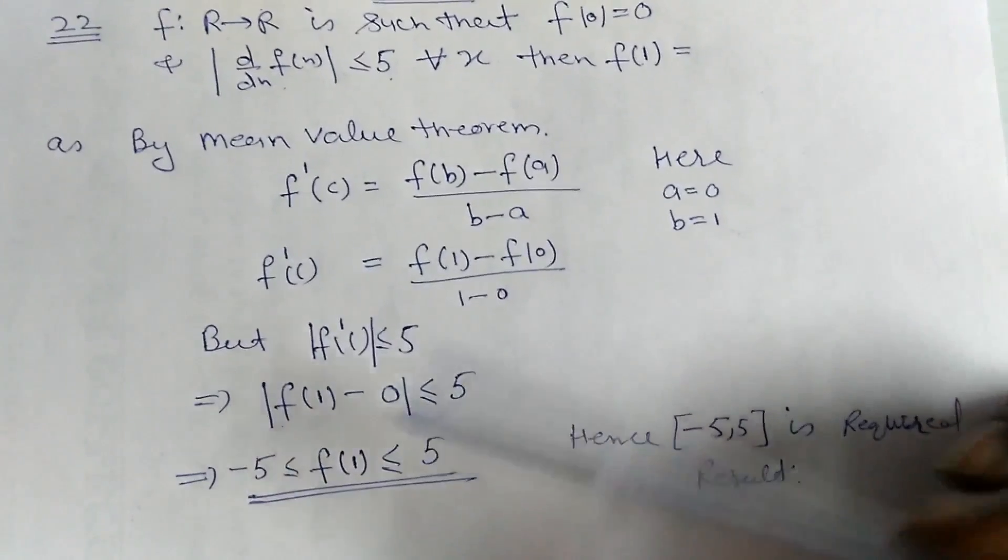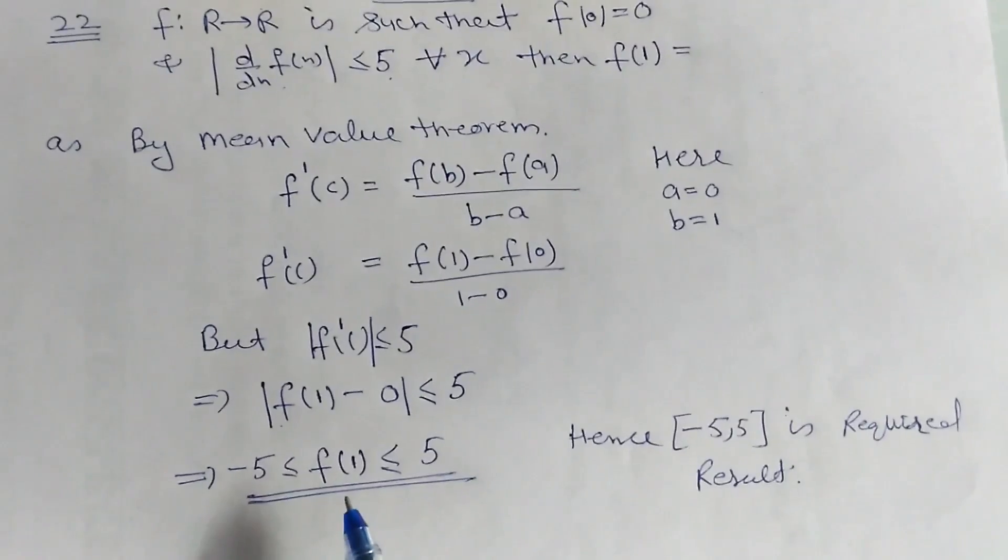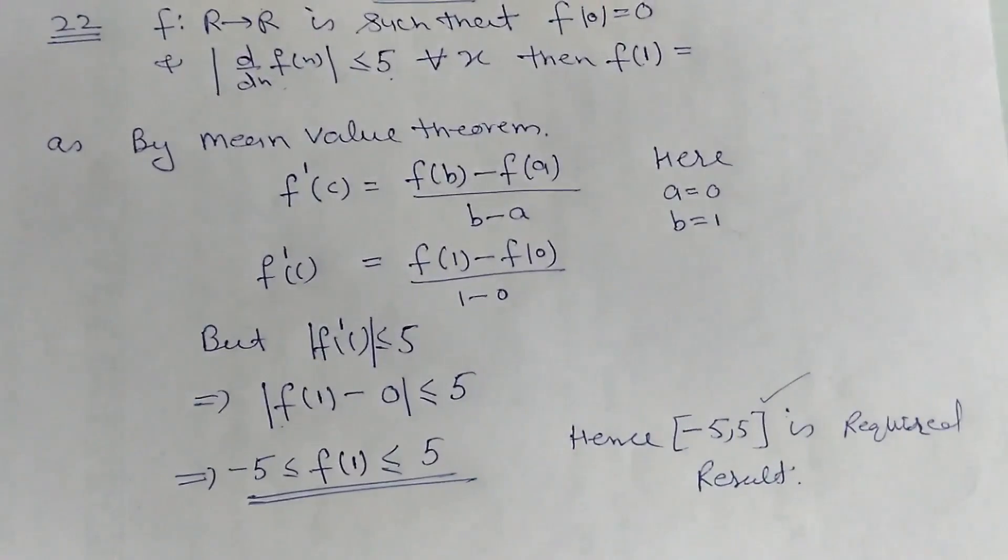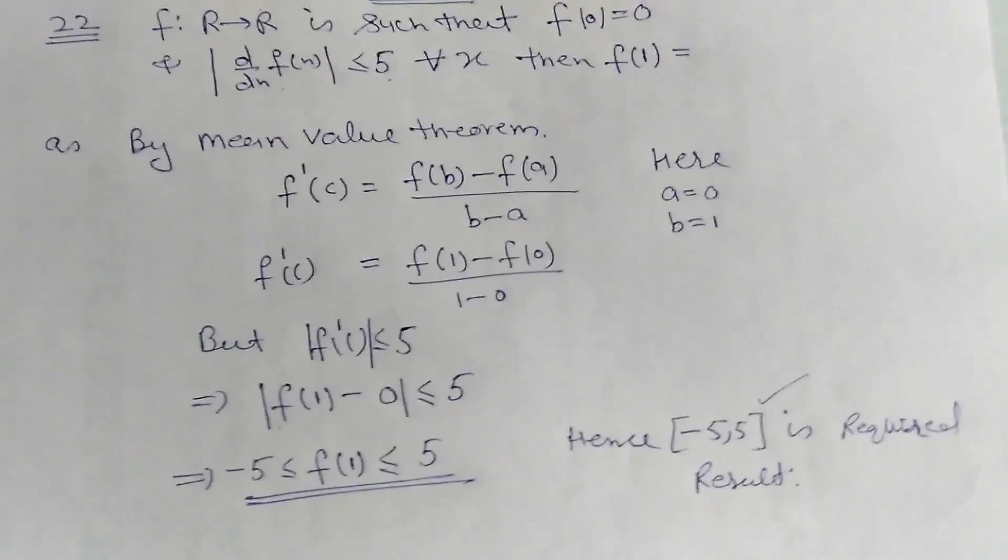By this, -5 ≤ f(1) ≤ 5. The answer is option number 2: [-5, 5] as a closed interval. Thank you.